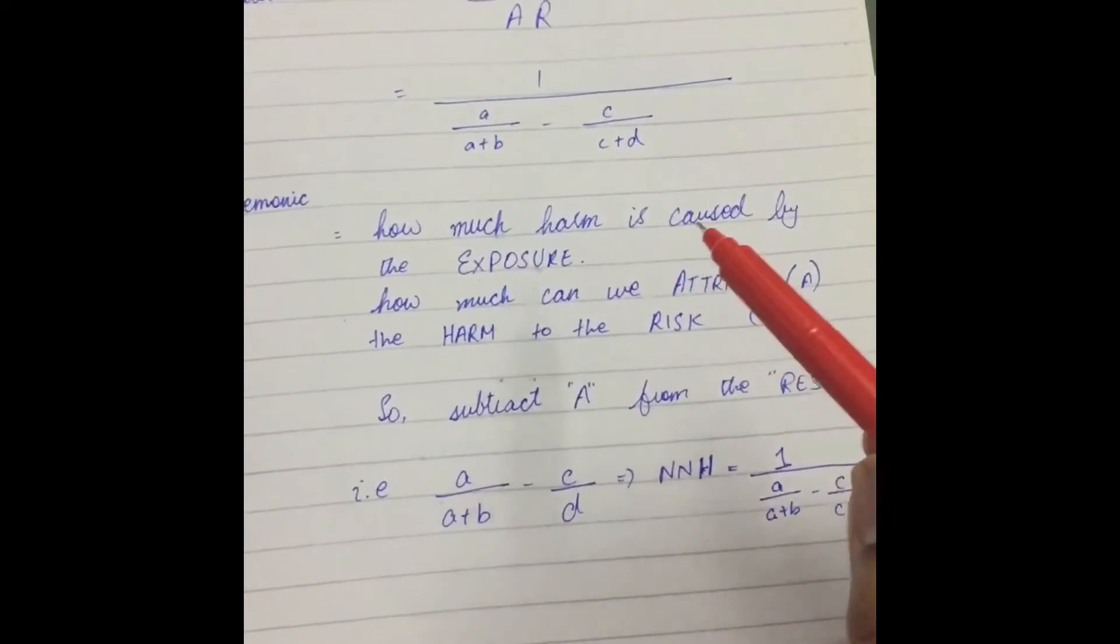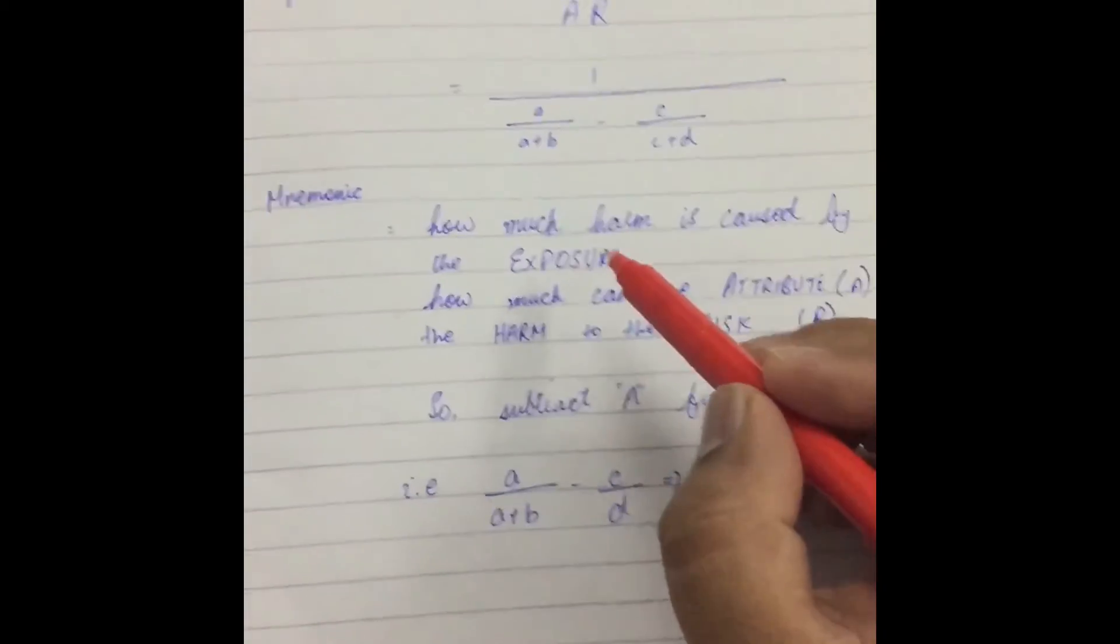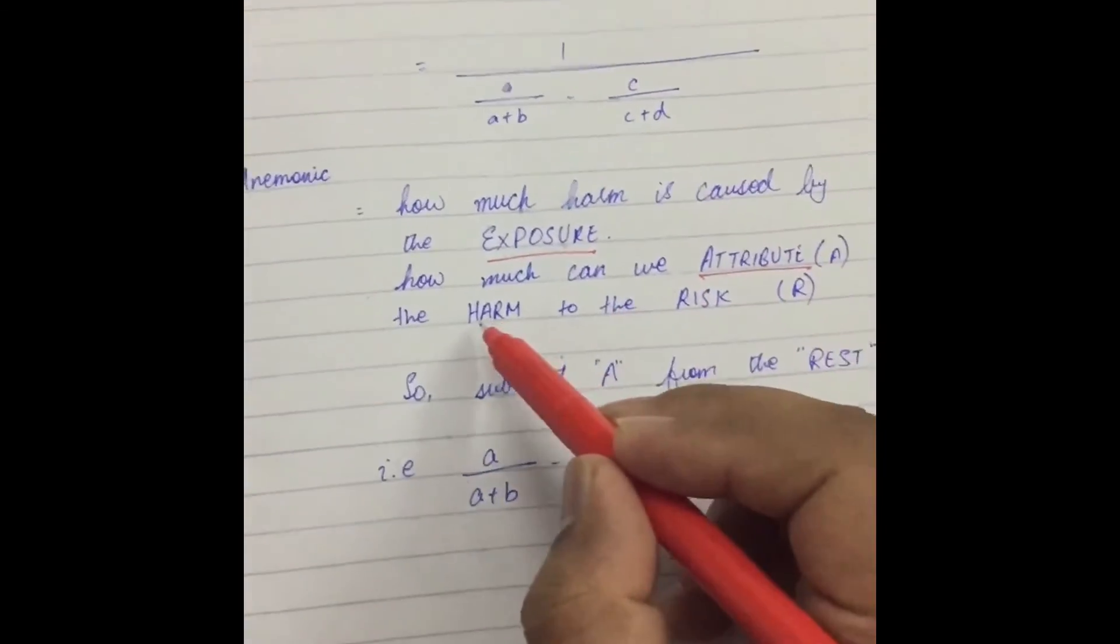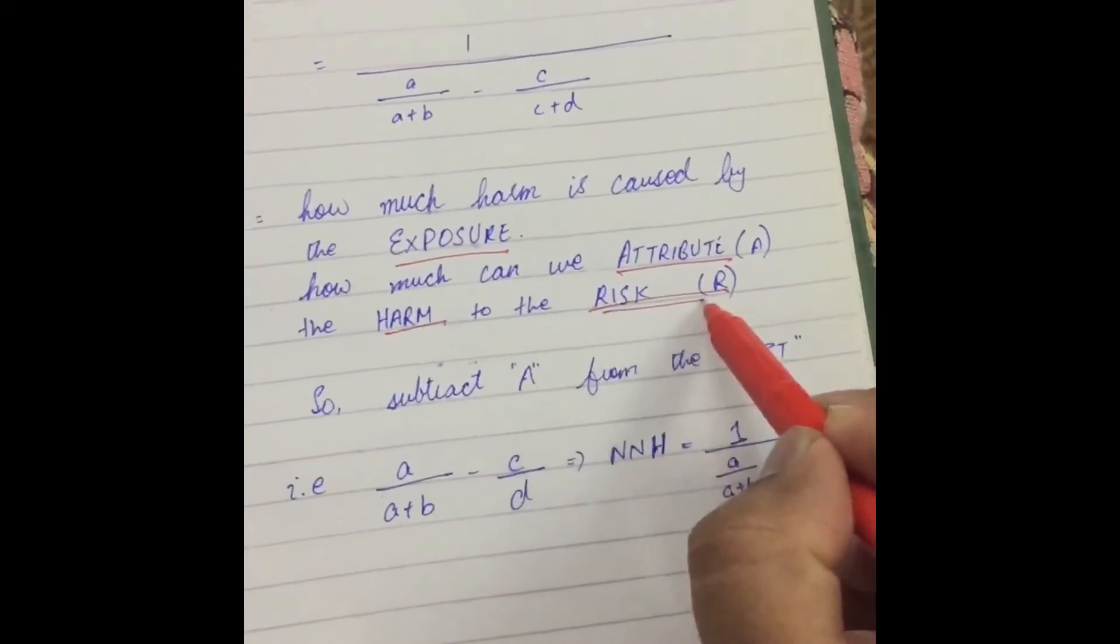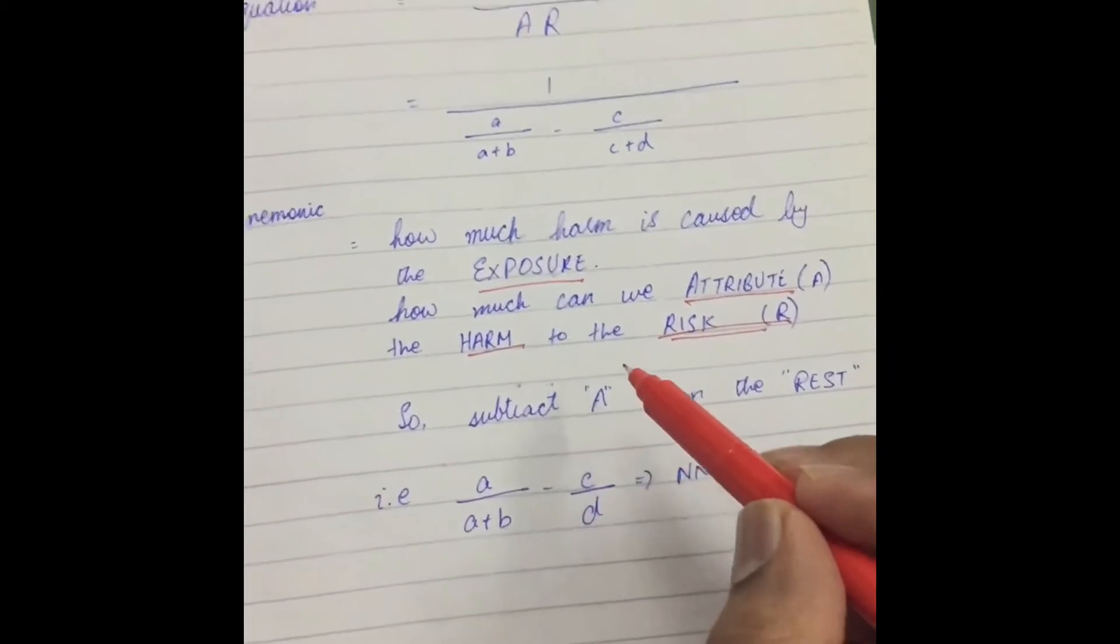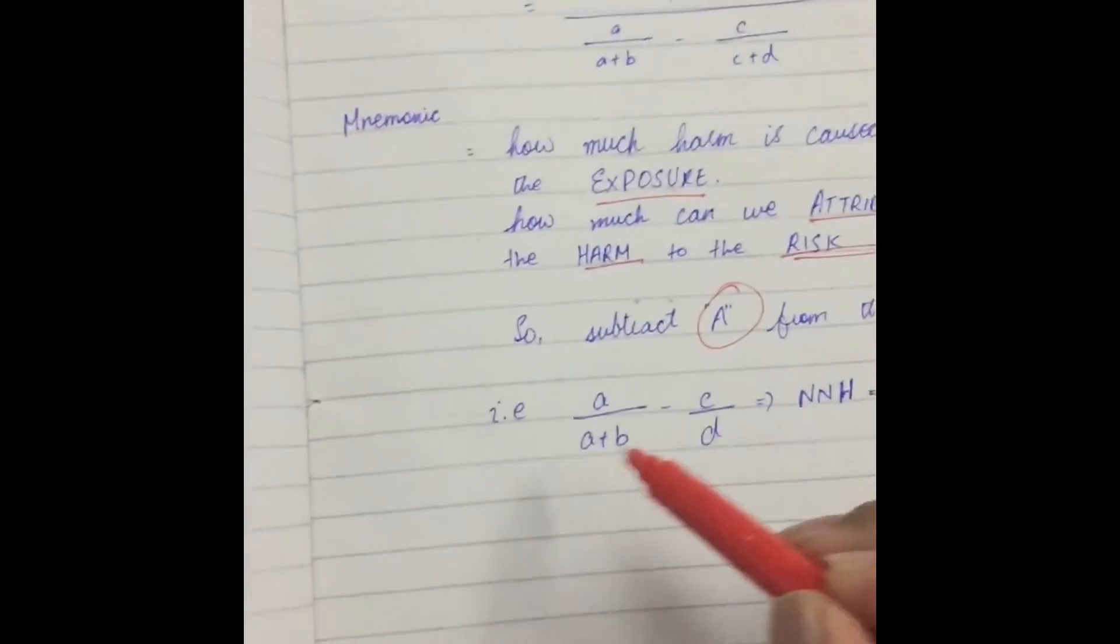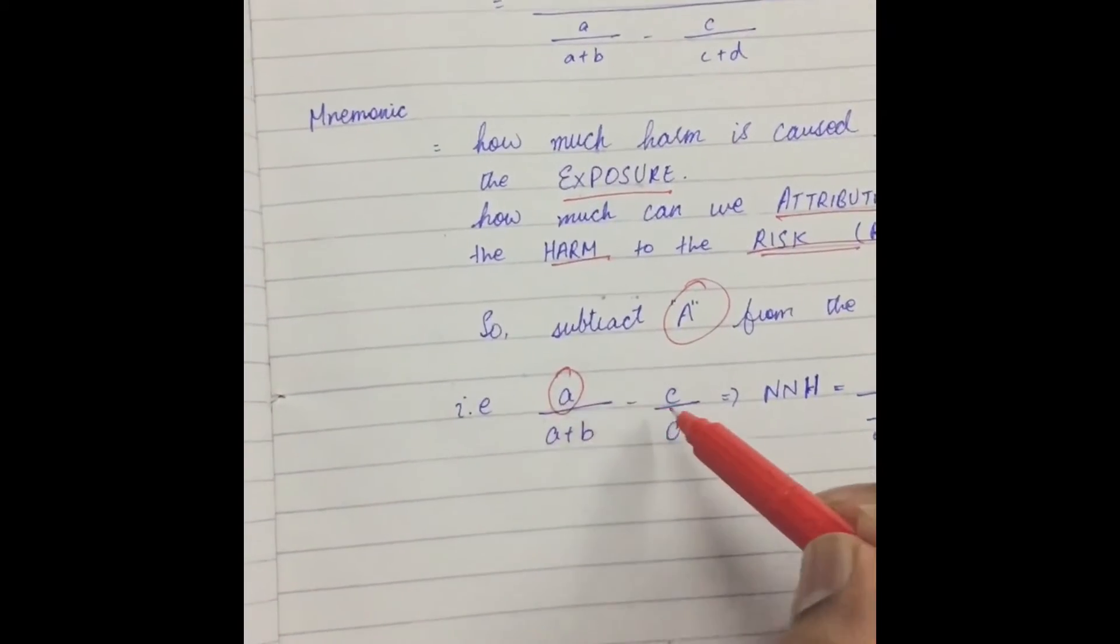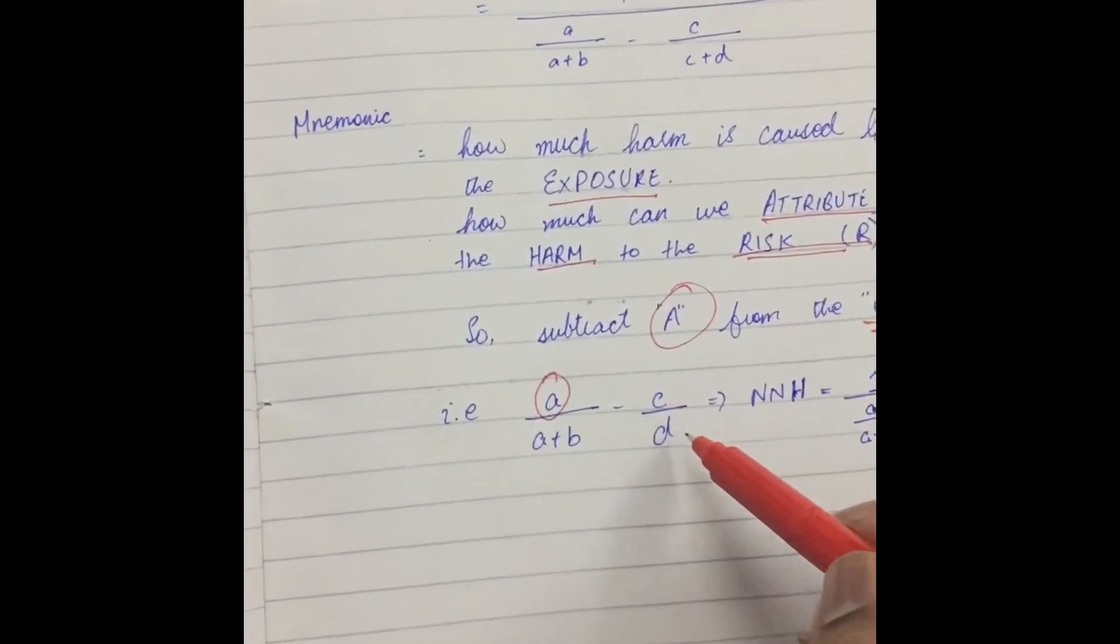Its explanation is how much harm is caused by the exposure. Or, how much can we attribute the harm to the risk? So, subtract A from the rest, and it becomes A, or A plus B, A, subtracted by the rest.